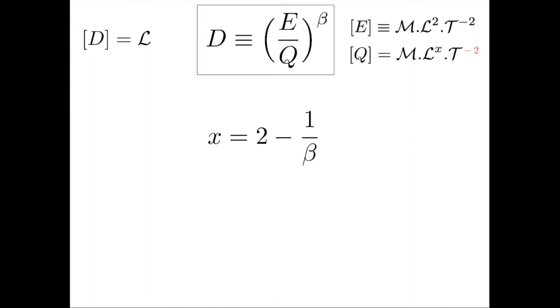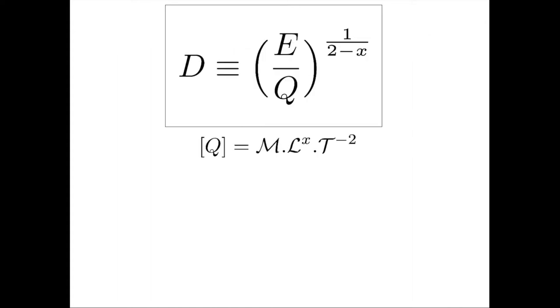Different choices are possible for the quantity Q, associated with different values of the space exponent x, and so leading to different scaling exponent 1 over 2 minus x for the relationship between d and the energy e. We will come back on this multiplicity of solutions at the end of this video.